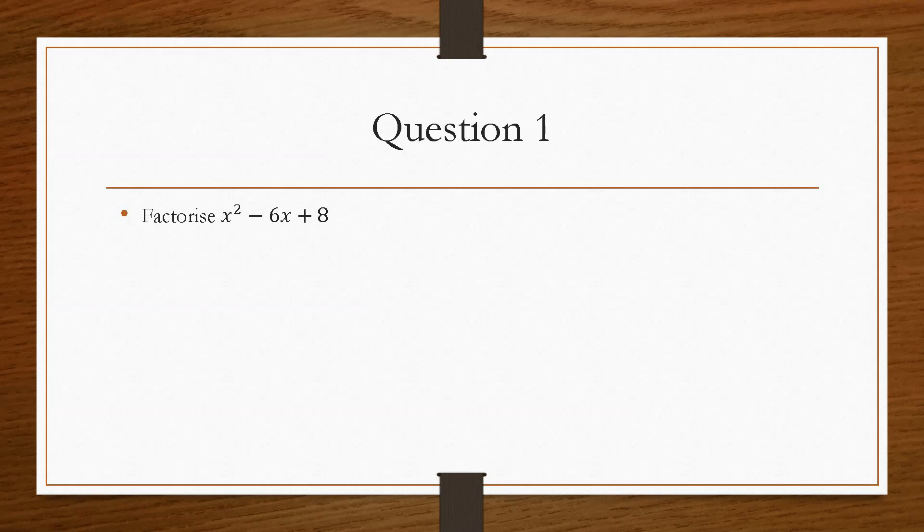So if we take a look at question number 1, it asks us to factorise x squared minus 6x plus 8. The first thing that we need to do is write out the equation and then underneath draw two empty brackets and make that equal to 0.